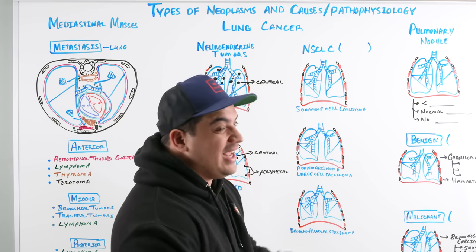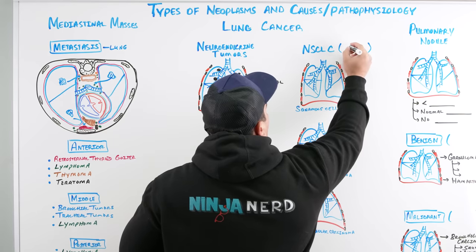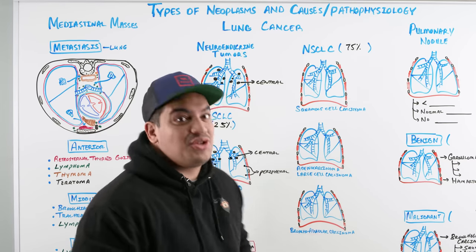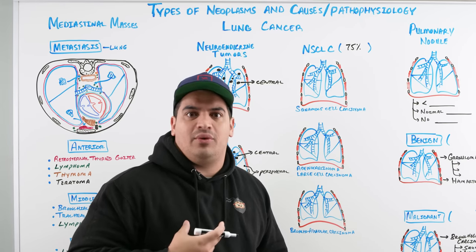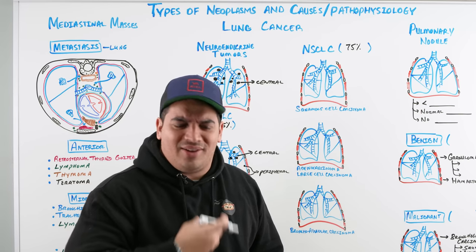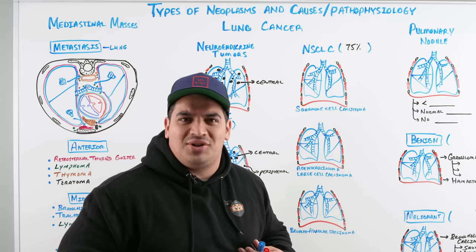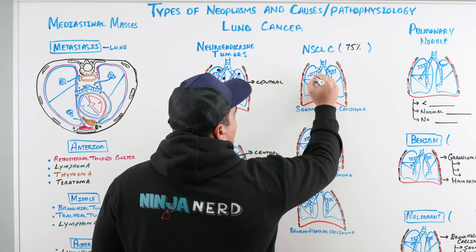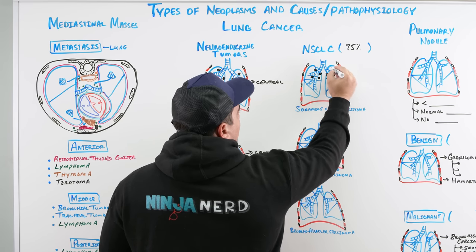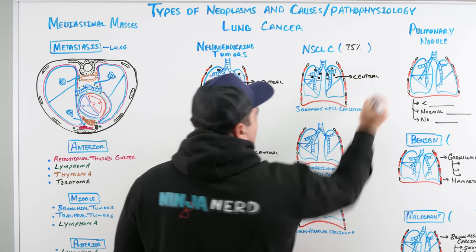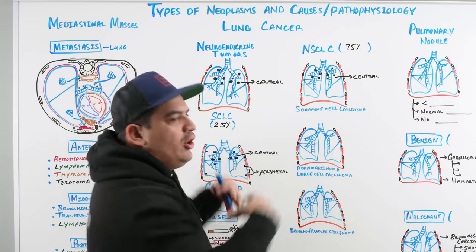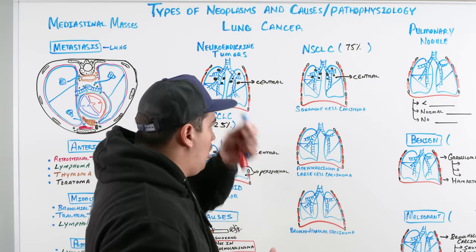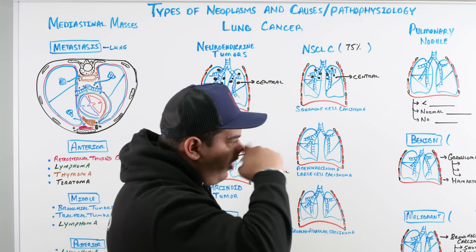Non-small cell lung cancer accounts for about 75% of all lung cancers. One type is squamous cell carcinoma, which arises from the pseudostratified ciliated columnar epithelium of the bronchial system and transforms it into squamous tissue. Squamous cell carcinoma is primarily a centrally located tumor — this is really important because central versus peripheral location determines specific features and complications.